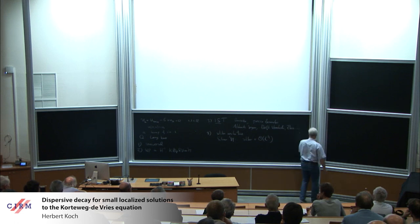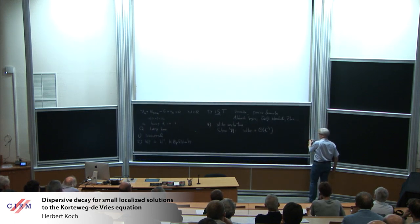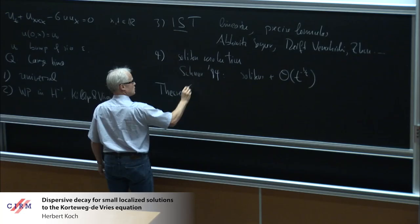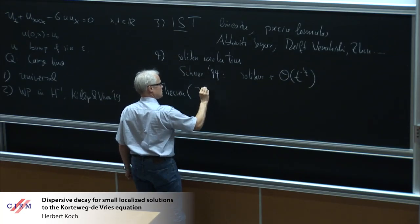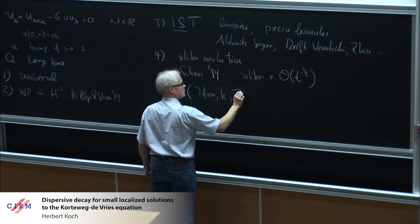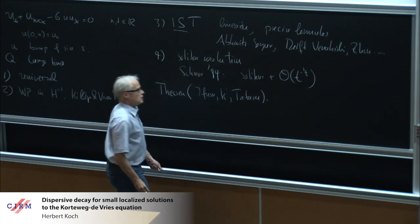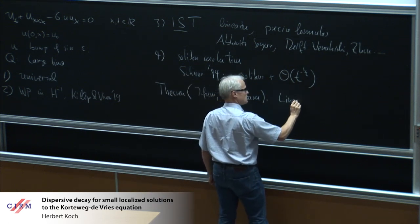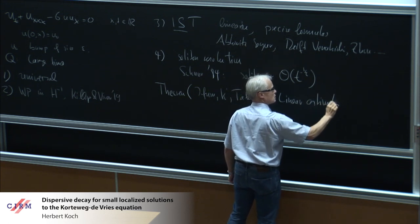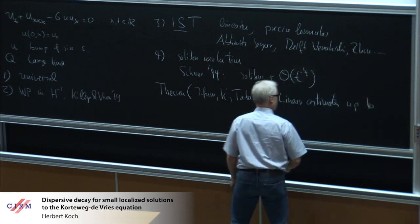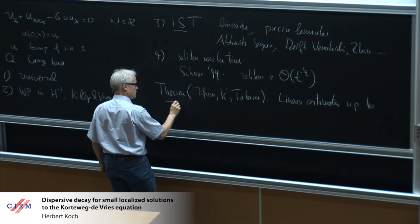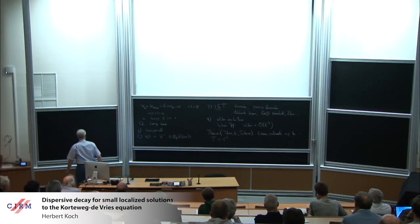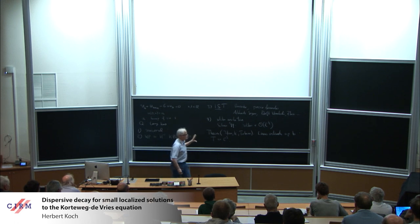Now, a very rough version of the theorem I'm presenting is the following. It's the same estimates, the linear estimates, I'm going to be more precise later, up to some t which is small compared to epsilon to the minus three. Epsilon being the size here. So these are the linear estimates of the linear equation.